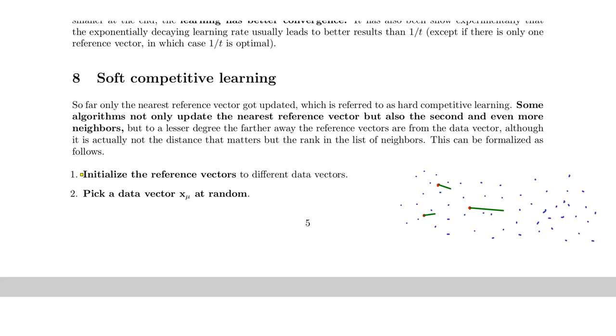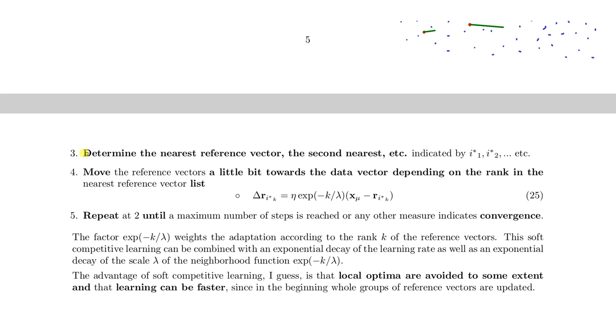So we have this again, initialize the reference vectors, pick a data vector at random, and then determine the nearest reference vector, the second nearest, etc. And then move the reference vectors a little bit towards the data vector, depending on the rank of the list, the rank in the list of reference vectors. And this is indicated by this equation. And often the neighborhood is reduced over time. And then, of course, repeat.